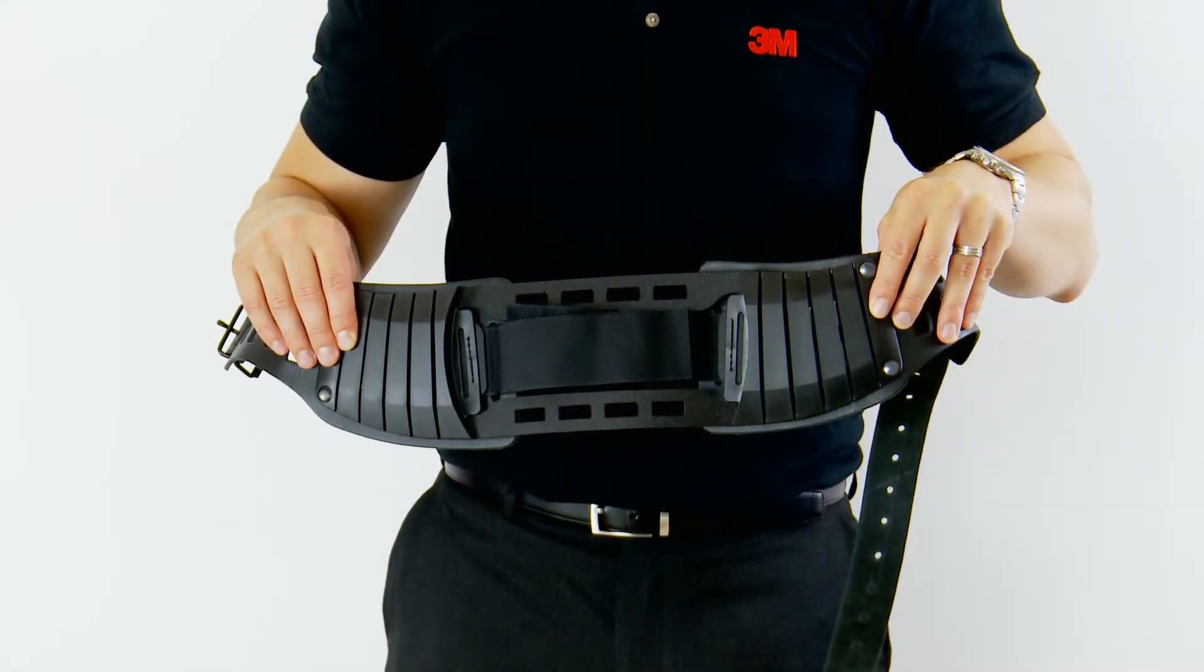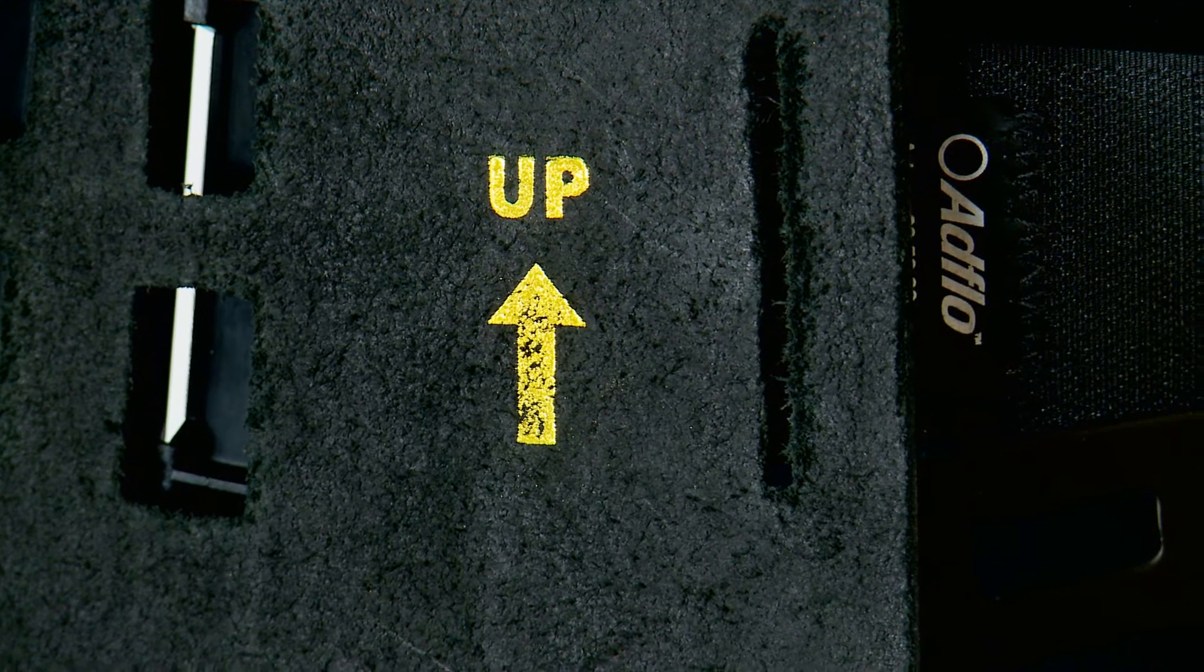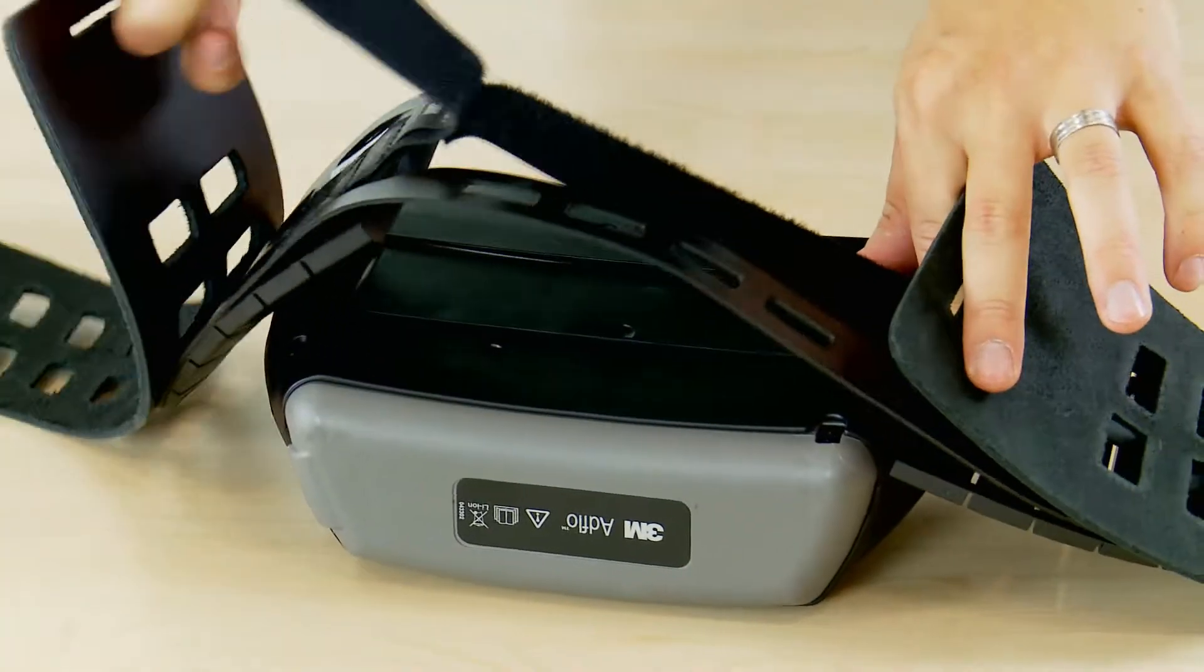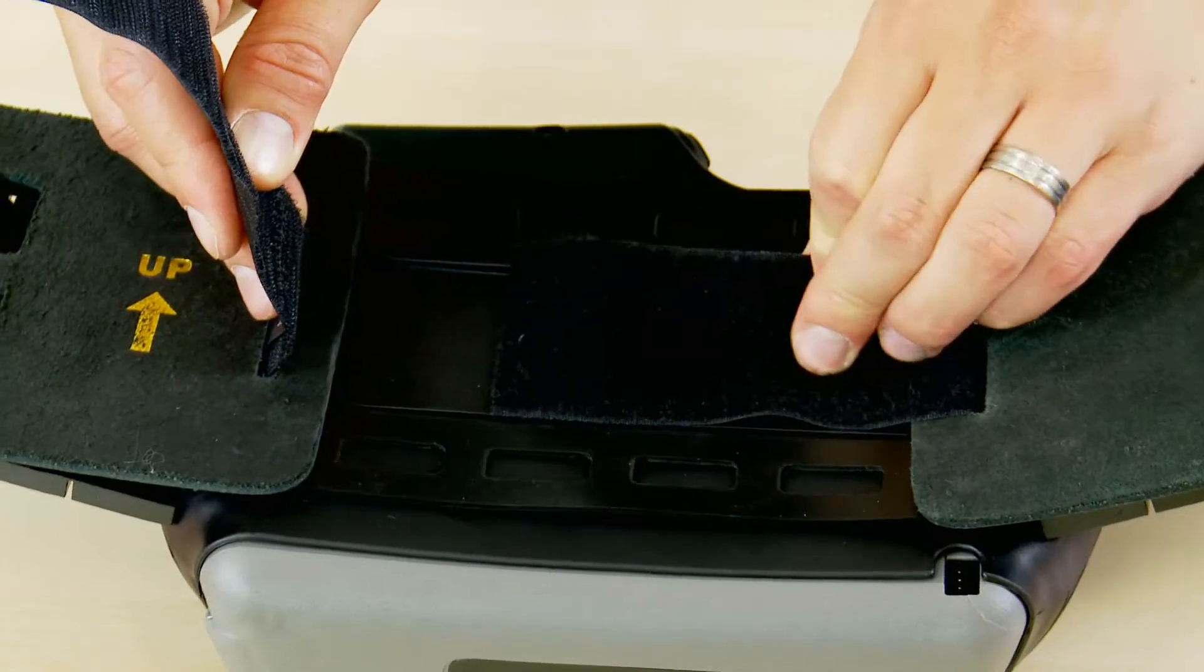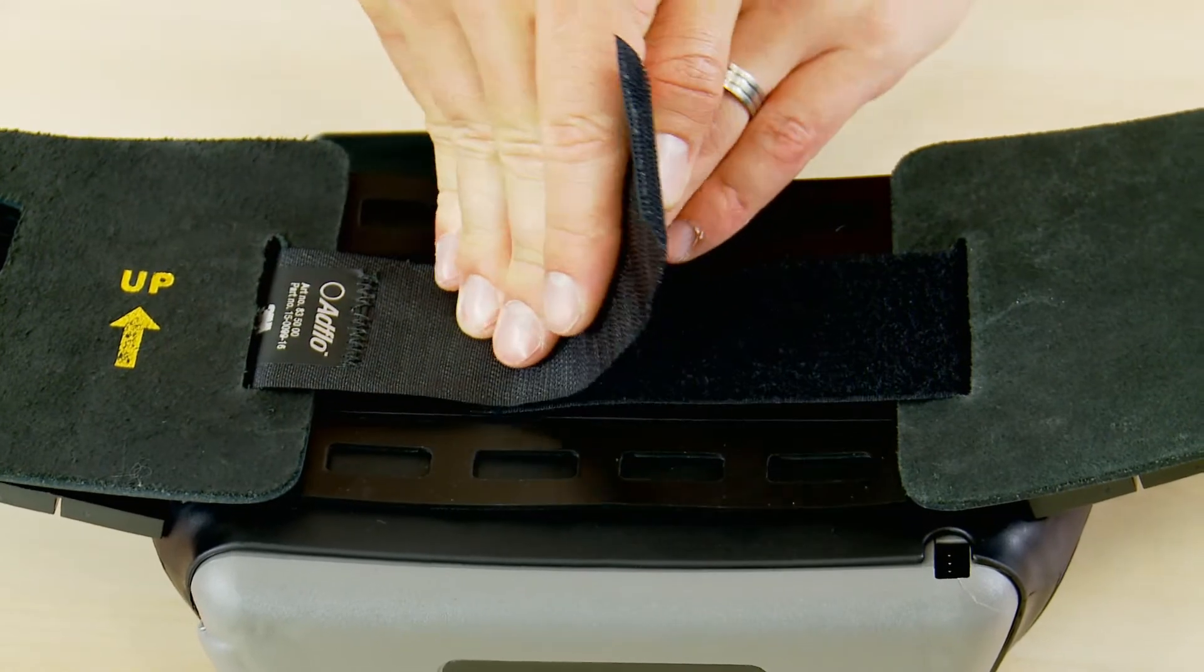The next thing you need to do is fit the belt. Make sure it is the right way up as shown by the arrow. Then ensure that the velcro is done up tightly so the AdFlo is secure and doesn't bounce around when you move.